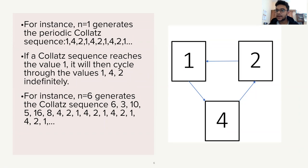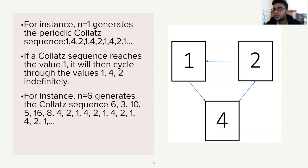To understand this better, let's take the integer 6. It generates the Collatz sequence: 6, 3, 10, 5, 16, 8, 4, 2, 1. Once we've attained the value 1, it again cycles through 1, 4, 2, 1, 4, 2, and so on. This is a common feature of any Collatz sequence — once you attain 1, you get the same three numbers repeating.